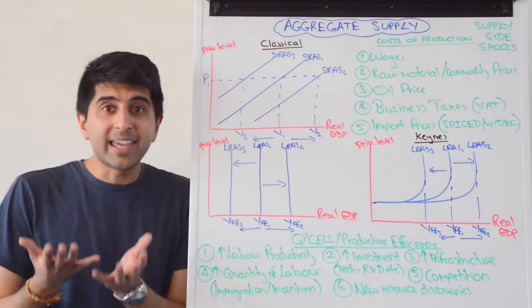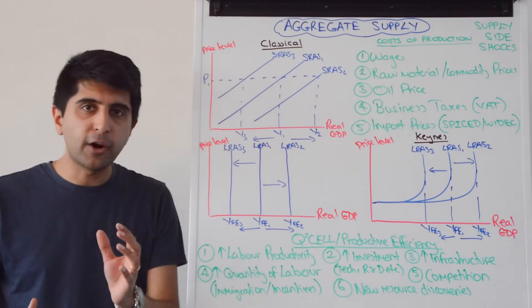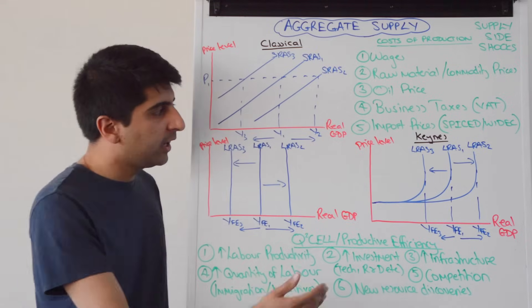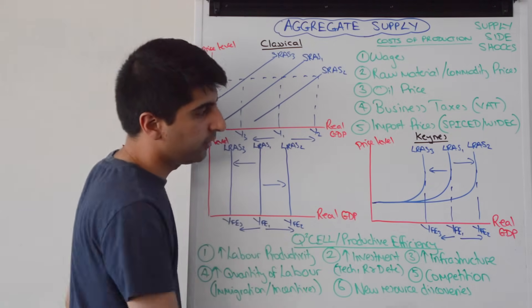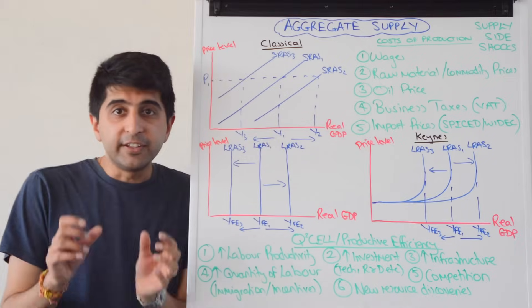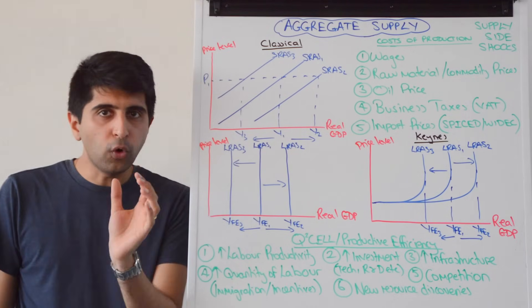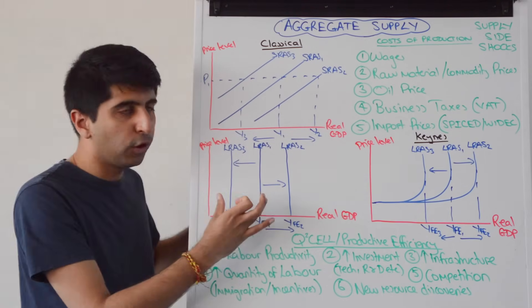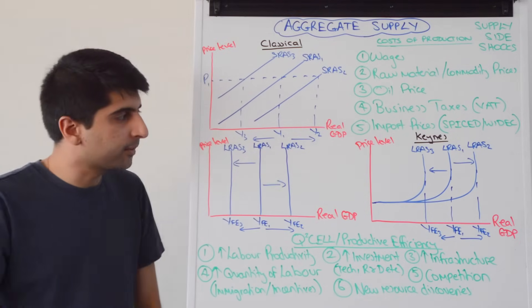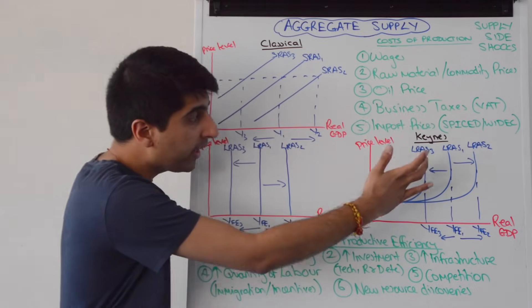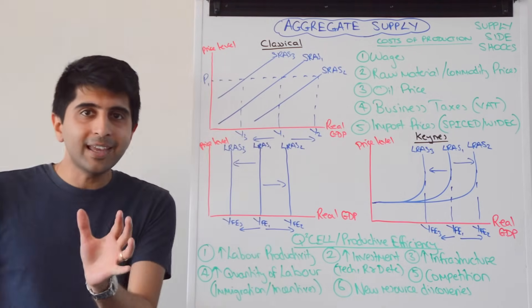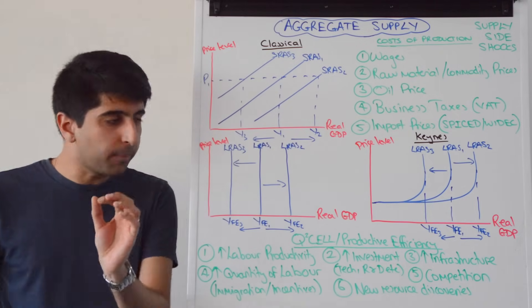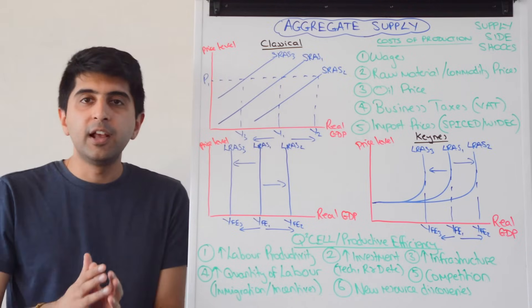What about the Keynesian interpretation? Keynesians do not dispute at all the reasons why the LRAS curve can shift right or left — all the factors we've talked about, Keynesians 100% agree with. The disagreement occurs over the shape of LRAS and what it actually represents. Keynesian economists totally dispute the idea of there being a short-run and long-run aggregate supply. They say that the economy can be producing less than YFE and that could be a long-run level of output — there isn't just one long-run level of output the economy will always be at.